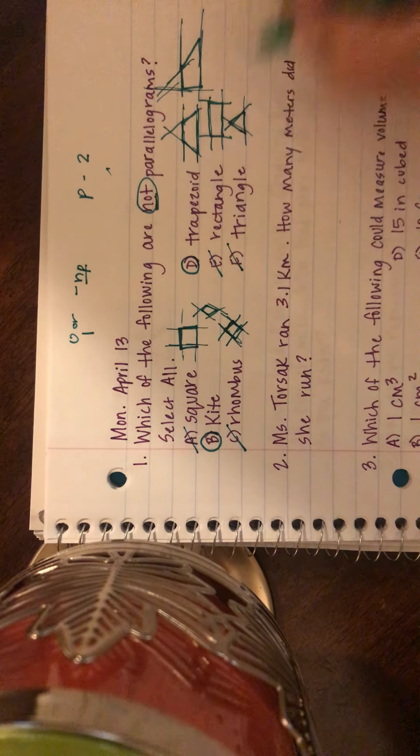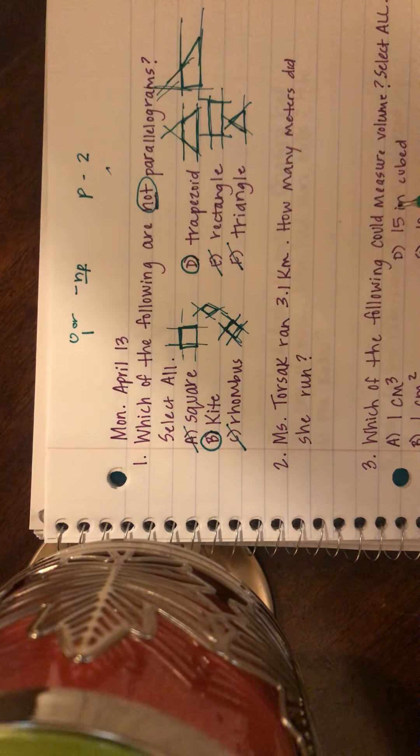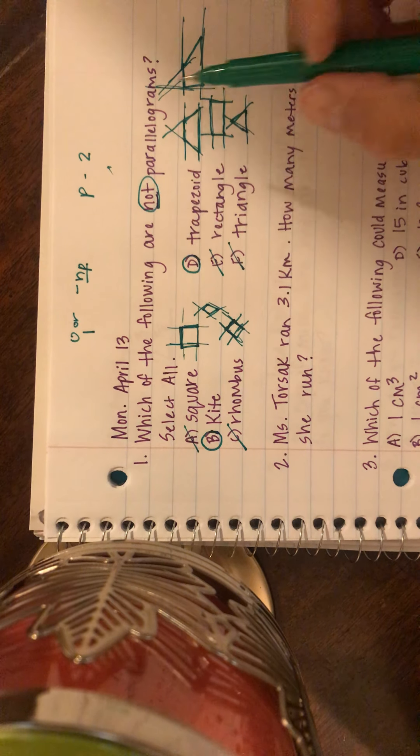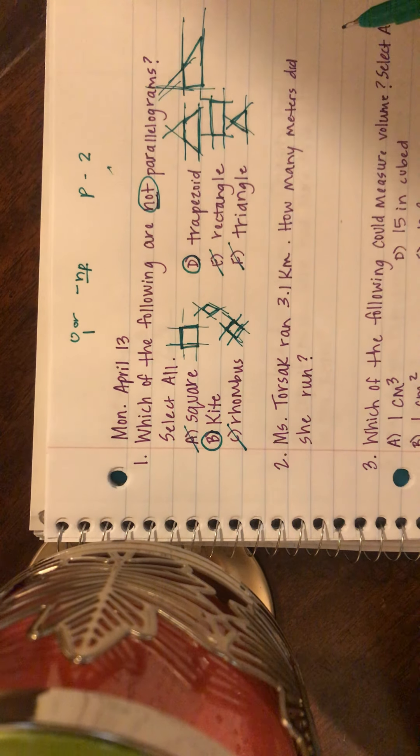And all of their lines if we were to extend them out would intersect. Number one, but number two they don't have opposite sides that would continue on forever. So a triangle is not a quadrilateral, therefore it is not a parallelogram.